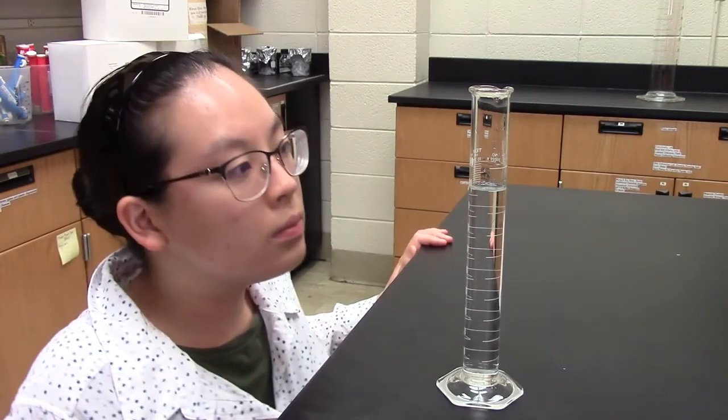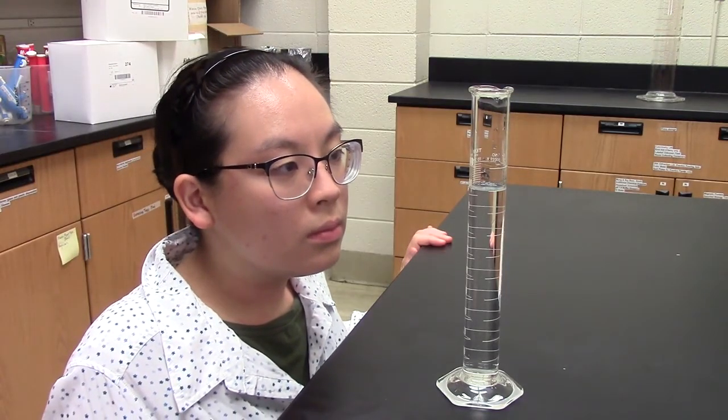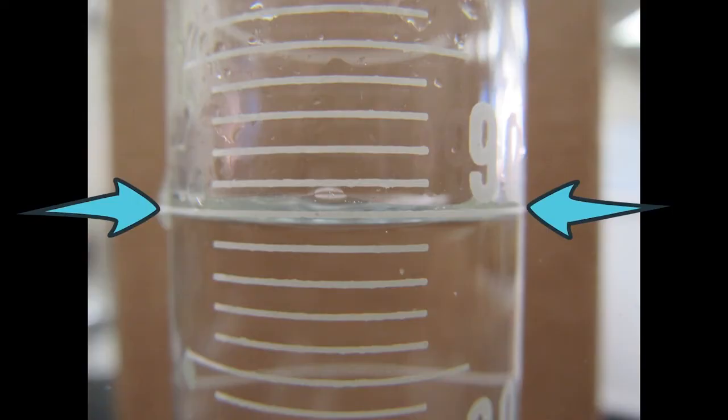When you're looking at the amount of liquid in a graduated cylinder, be sure you are at eye level with the cylinder and that you base your measurement at the bottom of the meniscus. The meniscus is a slight curvature at the top of the water column that forms as a result of the water sticking to the sides of the graduated cylinder. It's important to always read the volume of water from the bottom of the meniscus.